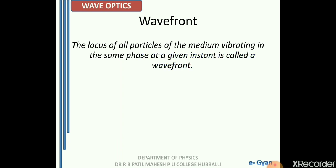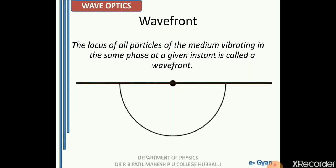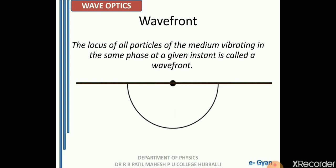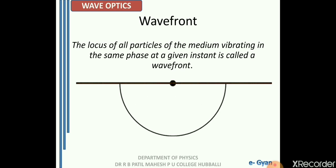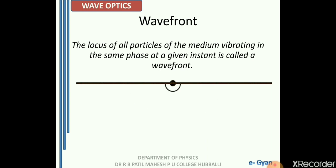To visualize it, assume that we have a point source from where the light emerges out. If I try to identify the points or particles of the medium which are in the same phase at an instant of time, I get a circle for a two-dimensional structure and a sphere for a three-dimensional structure. So this is what a wave front is.